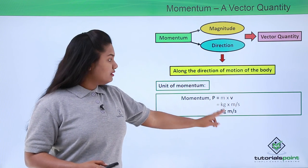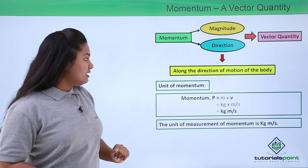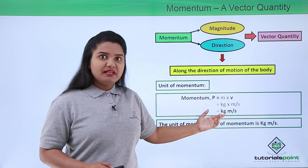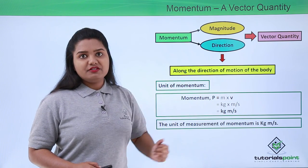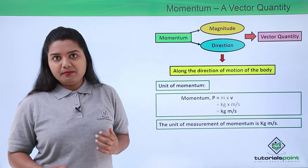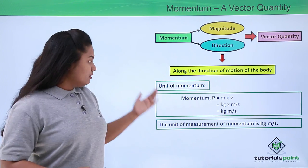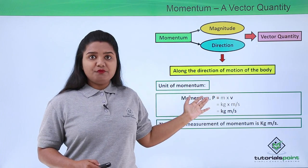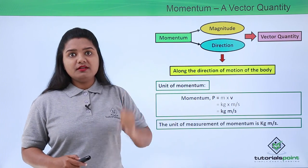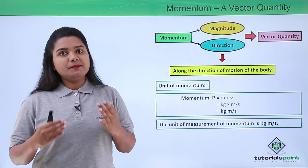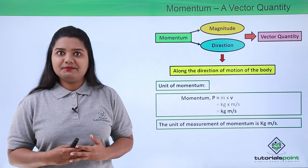So the unit by which we measure the momentum of a particular body is kg meters per second.